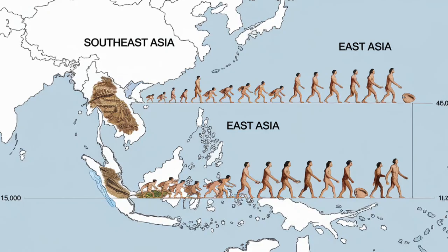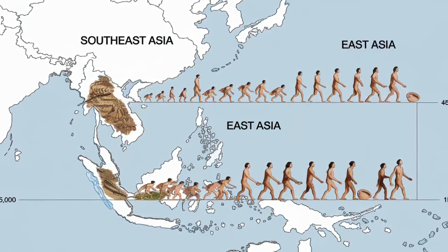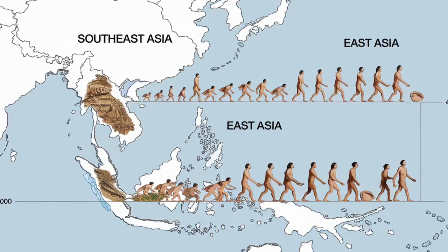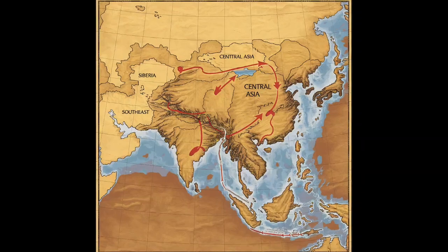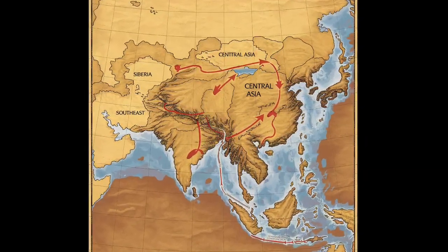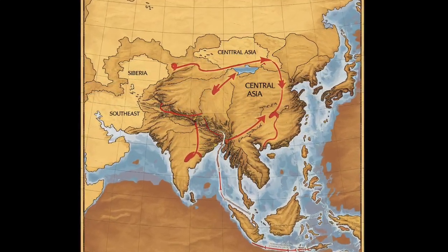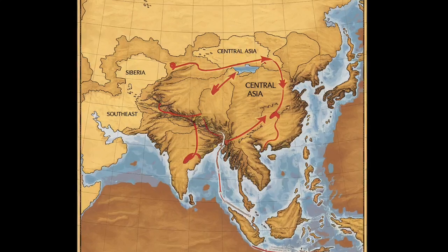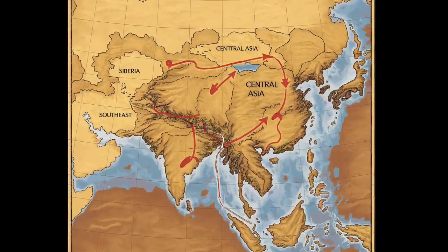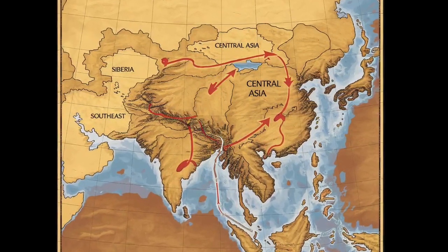This south-to-north migration is supported by genetic evidence that links some East Asian populations, including those from southern China and Vietnam, with Southeast Asian genetic markers. However, the second theory offers a more intricate perspective on these early migrations. It proposes that ancient humans entered East Asia from multiple directions — not just from the south, but also from the west, via Central Asia. According to this model, East Asia's genetic diversity can be traced to these two distinct waves of migration: one from Southeast Asia, and the other through Central Asia.